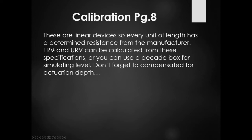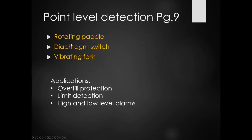The next three devices we're going to look at are point level devices: the rotating paddle, diaphragm switch, and vibrating fork. These are all relatively simple, straightforward devices that act just like any type of switch — wherever they are mounted is the trip point for the application. Applications include overfill protection, limit detection, and different types of alarms such as high level and low level.